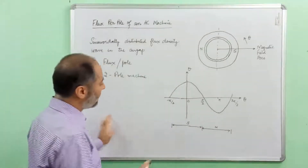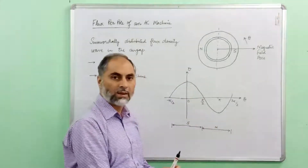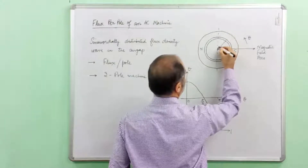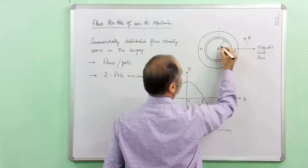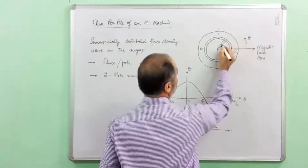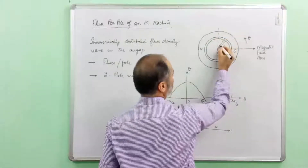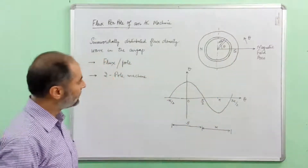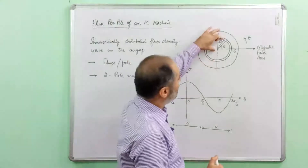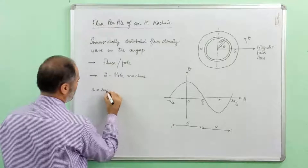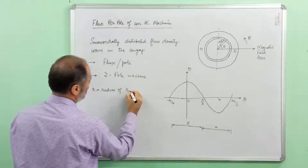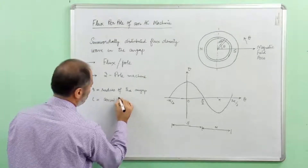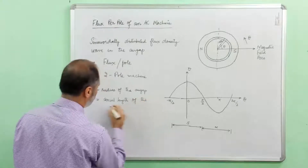Now to determine the flux under one pole of this magnetic flux density distribution, let's consider a small portion of the air gap at an angle theta from the magnetic field axis, and let this small portion of the air gap subtend an angle d theta at the center. Suppose r is the radius of the air gap.